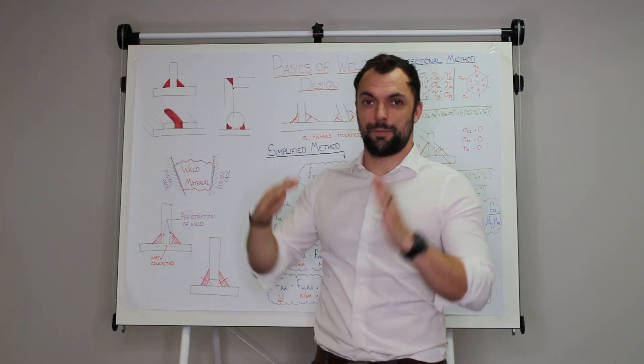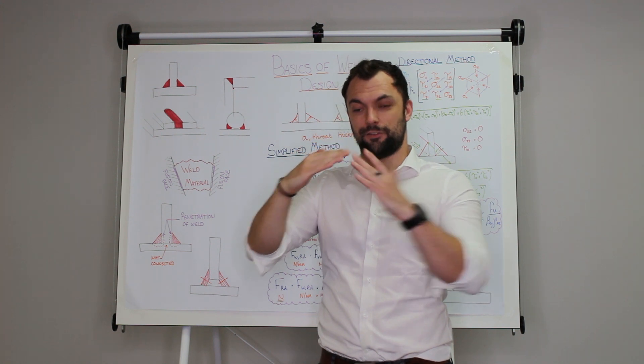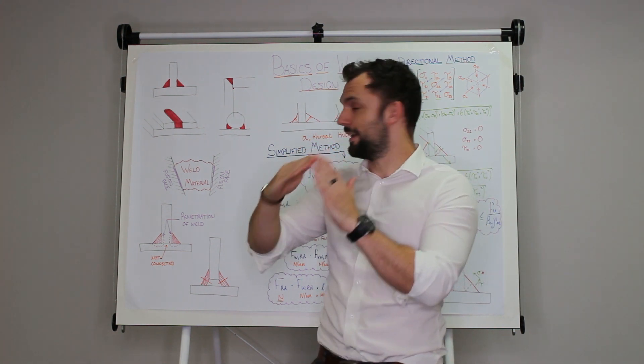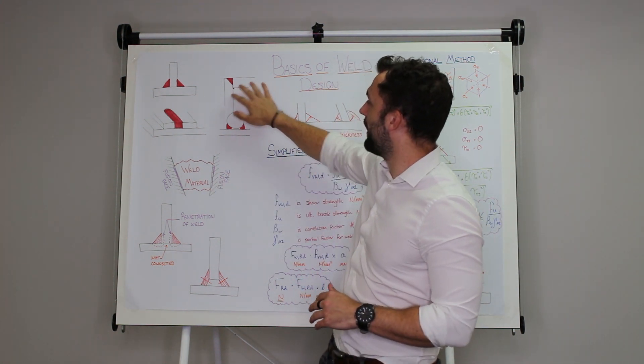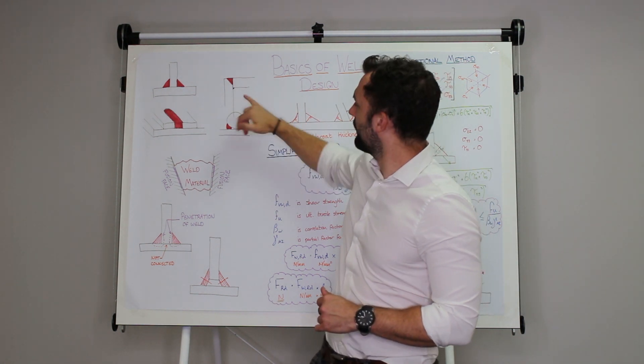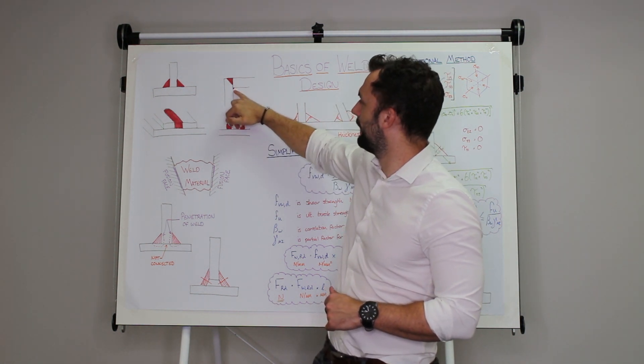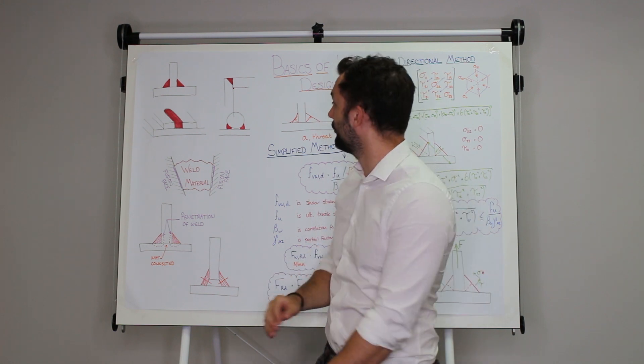A butt weld which tends to be the two ends of plates sometimes end to end sometimes at an angle. In this case we're showing a partial penetration butt weld and you often see this little dob of weld, little filler on the back there to seal the whole joint.